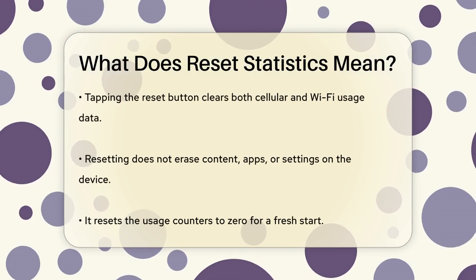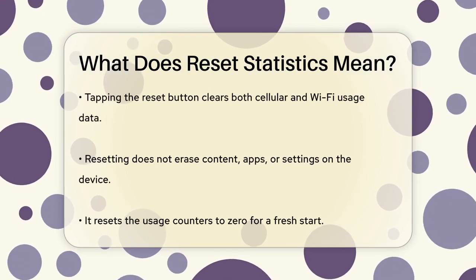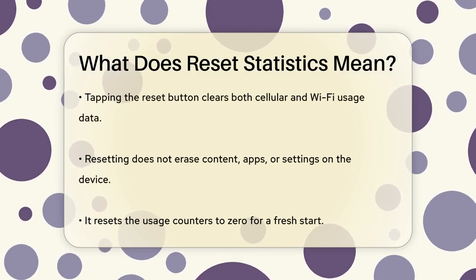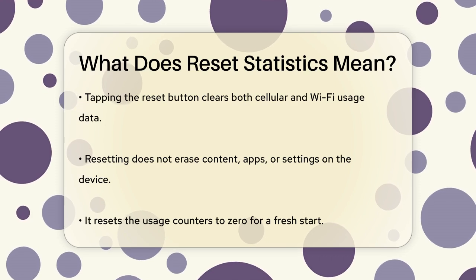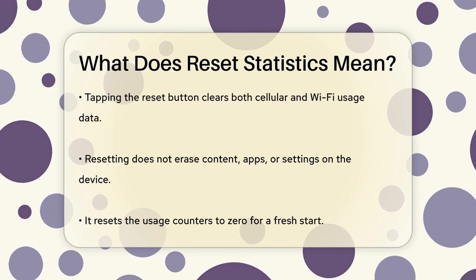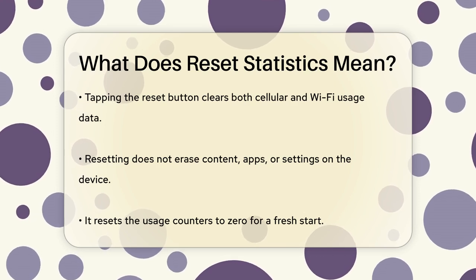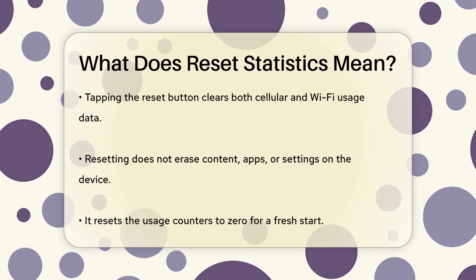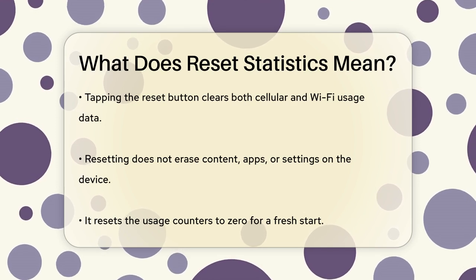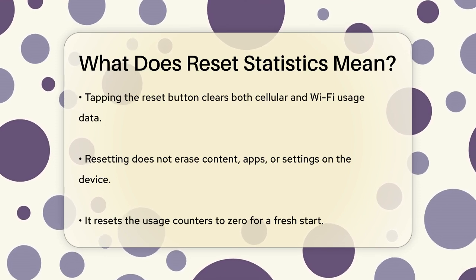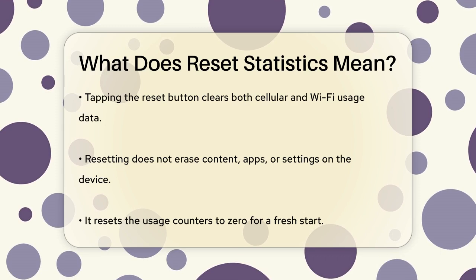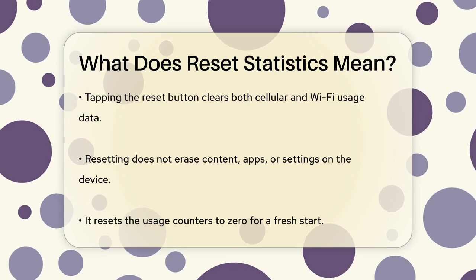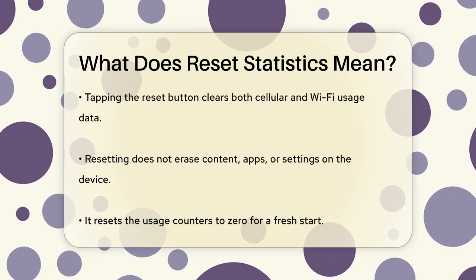Here's how it works. When you go to Settings, Cellular, Cellular Data Usage, you'll find an option to reset your statistics. Tapping this button clears all the data usage information, including both cellular and Wi-Fi usage. This doesn't erase any of your content, apps, or settings — it just resets the usage counters to zero.